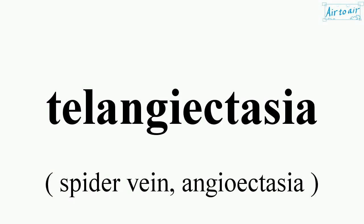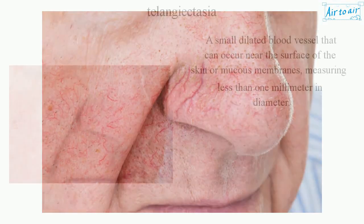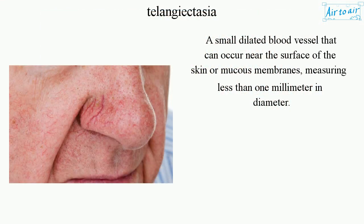Telangiectasia. A small dilated blood vessel that can occur near the surface of the skin or mucous membranes, measuring less than 1 mm in diameter.